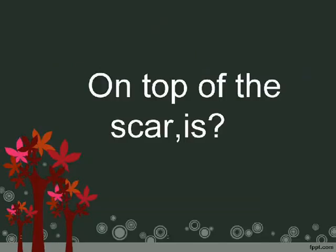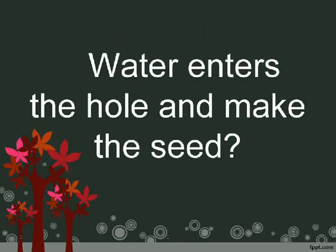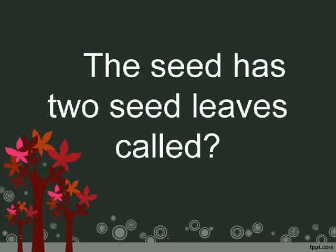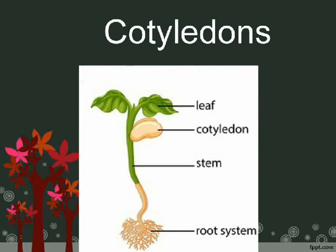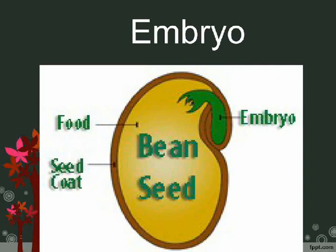On top of the scar is a small hole. Water enters the hole and makes the seed swell up. The seed has two seed leaves called cotyledons. Between the cotyledons is the baby plant called the embryo.